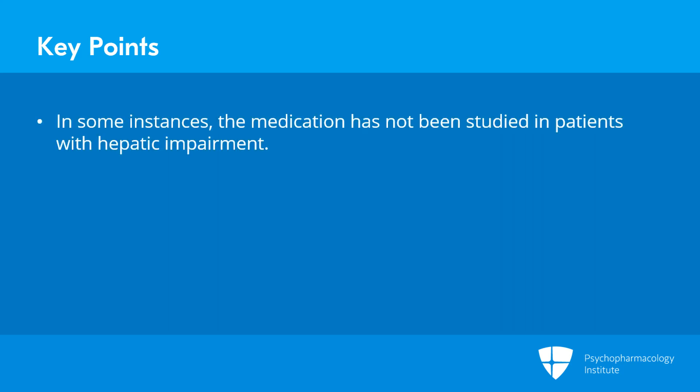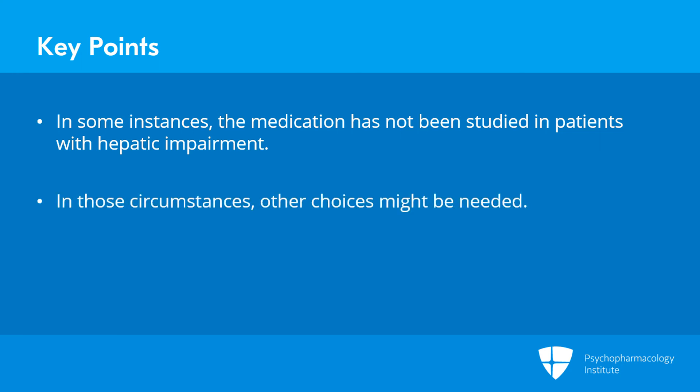In some instances, the manufacturer simply did not do the studies. The medication was never studied in people with hepatic impairment, and there will be language to the extent that it is contraindicated in patients with hepatic impairment simply due to the absence of data. In those circumstances, other choices might be needed. For example, like paliperidone — it was very clear that there's no data for people with severe hepatic impairment, so if you had somebody who was Child-Pugh C, you would have to find an antipsychotic for which that type of data is in the package insert.